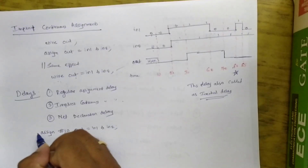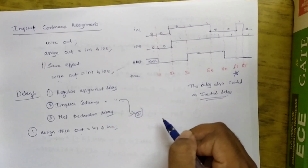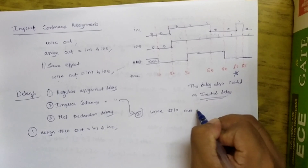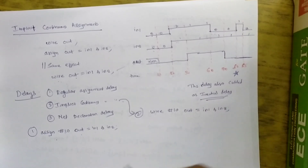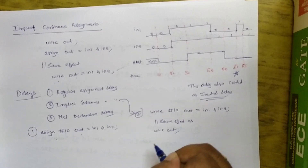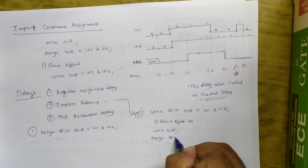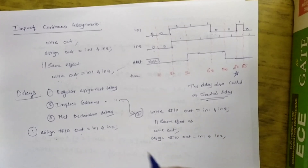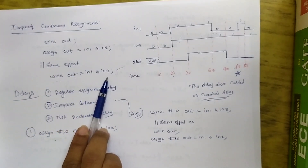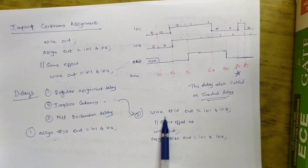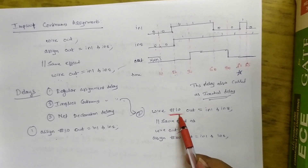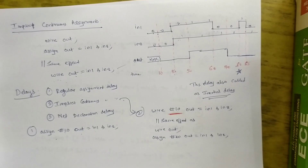The second type of delay is implicit continuous assignment delay. For example: wire #10 out = IN1 & IN2; This has the same effect as the regular continuous assignment with delay. Here a delay unit is inserted between 'wire' and 'out' during the net declaration itself — no separate assign statement is needed.